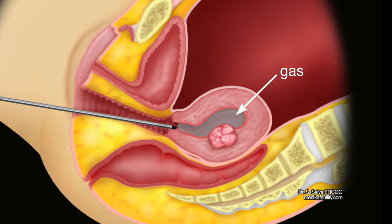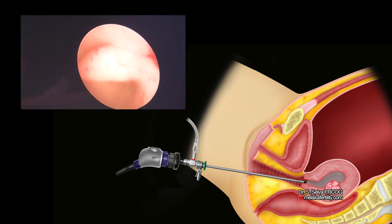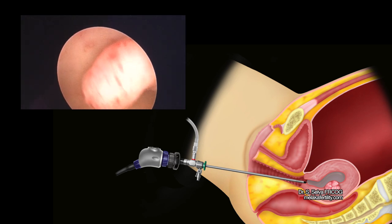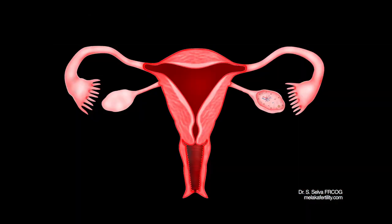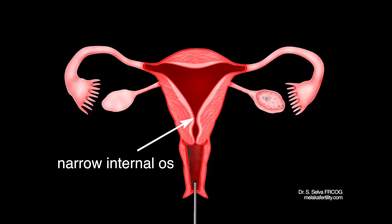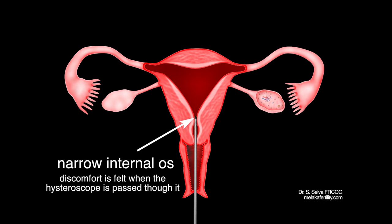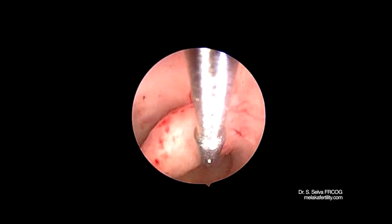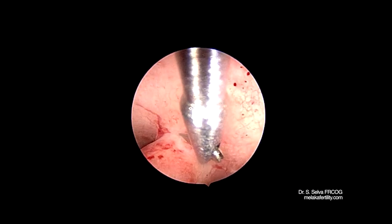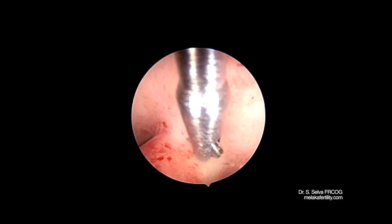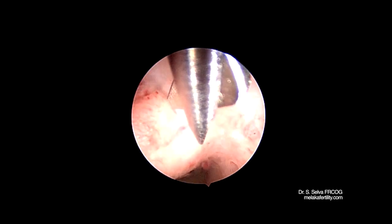Some doctors use a gas called carbon dioxide to distend the endometrial cavity. The endometrial cavity can be seen on a video monitor. Usually, the patient can see the procedure while it is being done. In some patients, due to a very narrow internal os, some discomfort may be felt when the hysteroscope is passed through it. Fine surgical instruments may be passed into the uterus to perform minor surgery such as taking a small sample of tissue called biopsy of the endometrium.